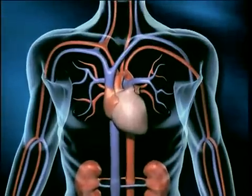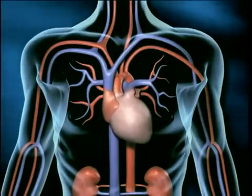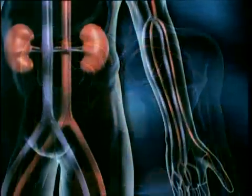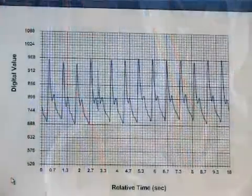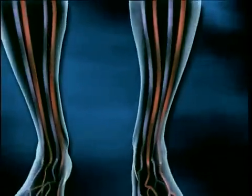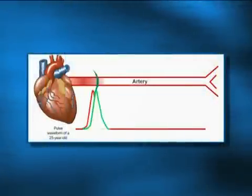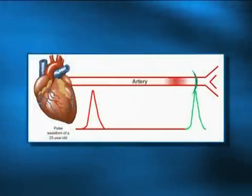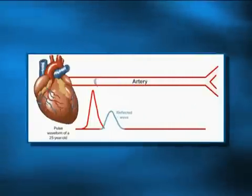We have to understand how the body generates a pulse wave. Generally, what happens is the heart pumps and pushes out blood. When the heart pumps, it generates a pulse wave, which is a contour wave that travels along the arterial tree. The waveform is generated at the heart and goes right down to the big aorta, and is reflected back when the aorta bifurcates or divides into two arteries.